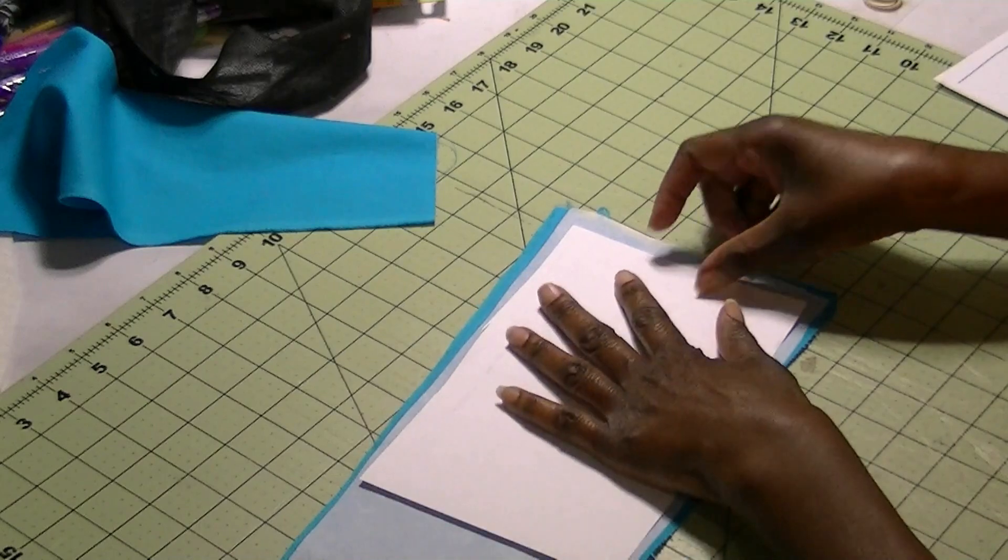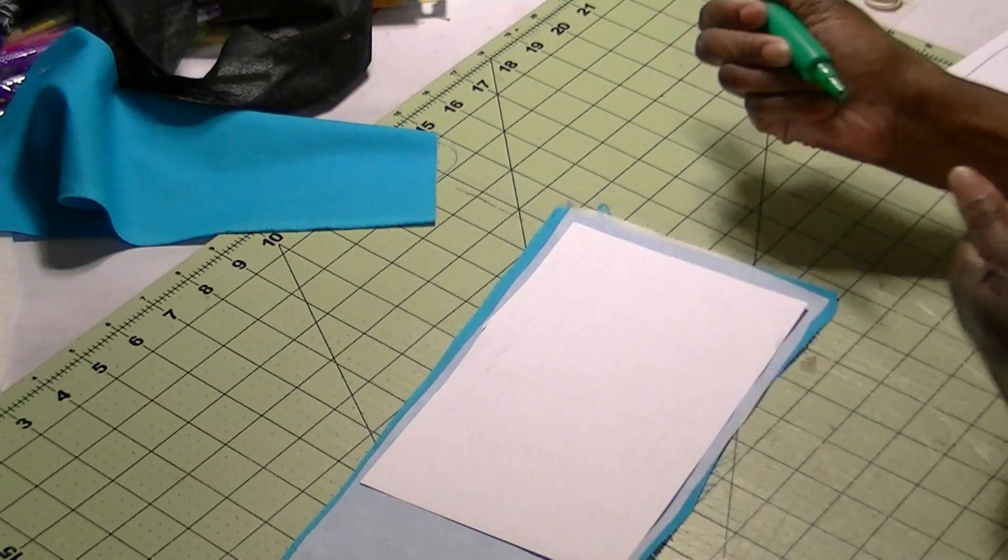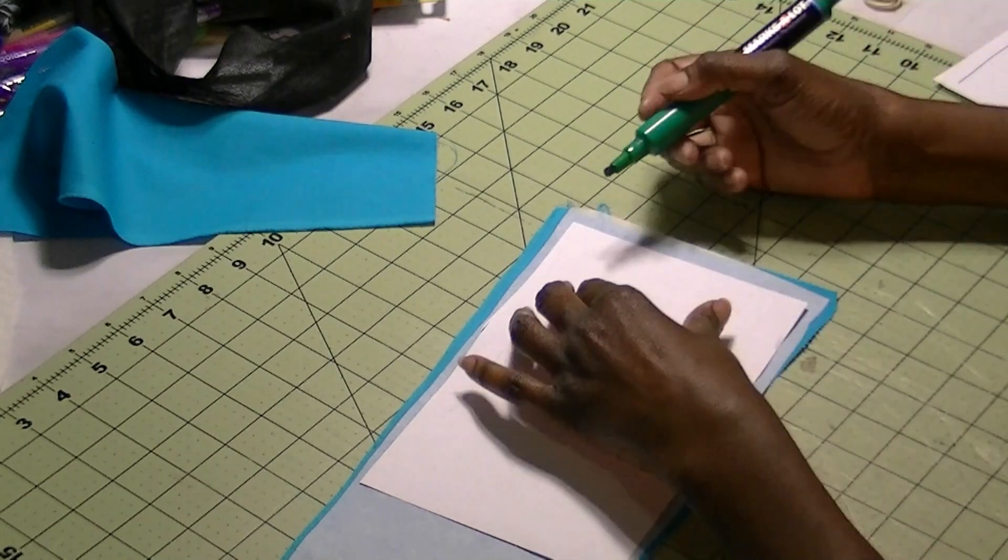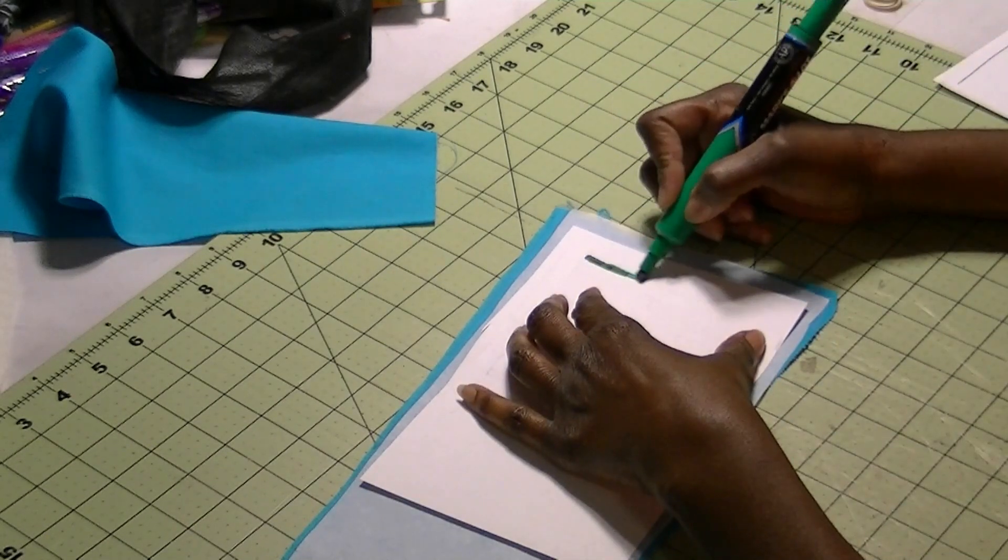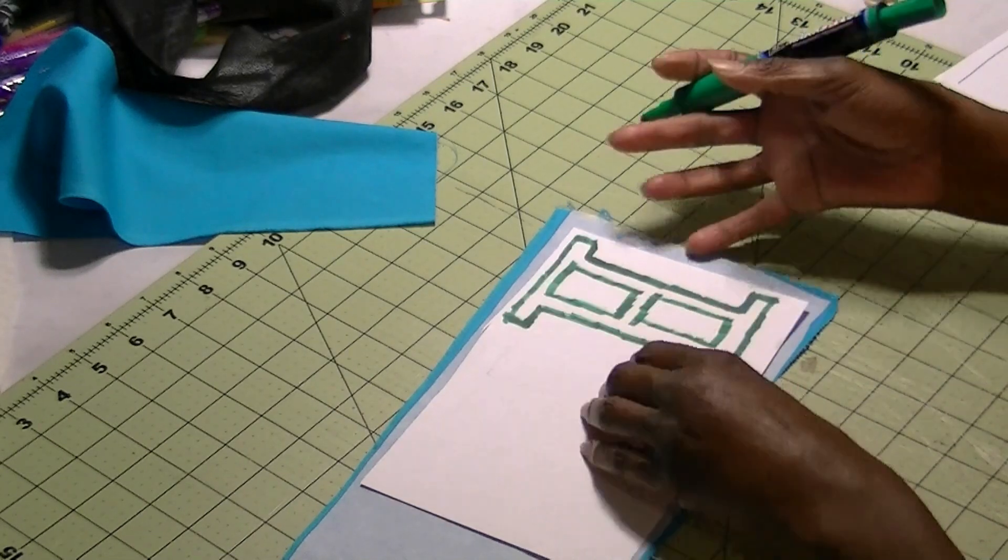So now there's a couple of ways you can do this. One way that I like is using a Sharpie or a nice permanent marker that will bleed through. And I will go through and I will just outline my letter.